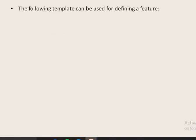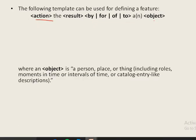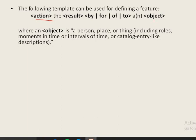Let us see a template that can be used for defining a particular feature. It takes the form: action, the result, then by/for/of/to an object, where an object is a person, place, or thing.